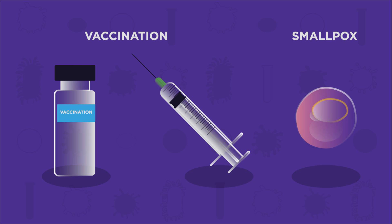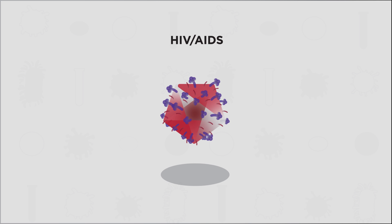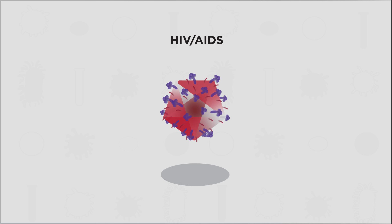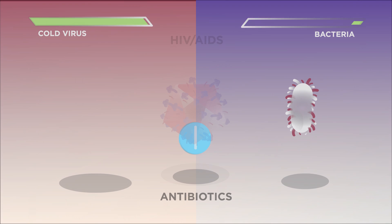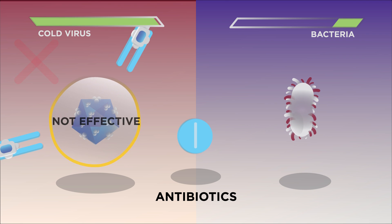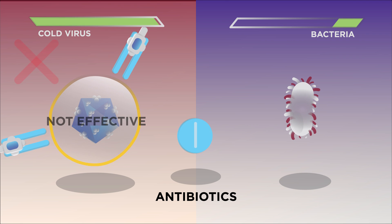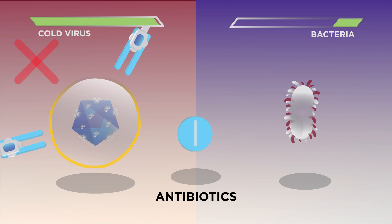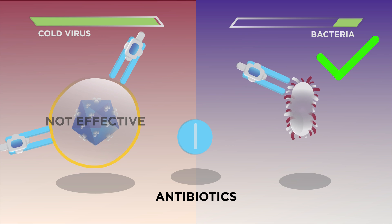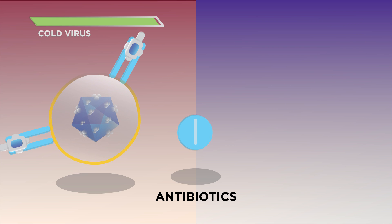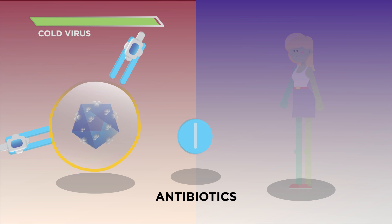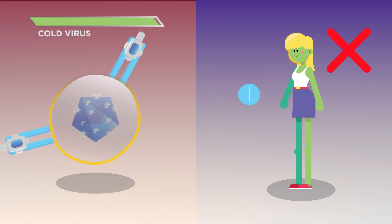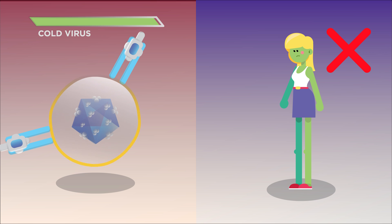However, some viruses like HIV have proved impossible to develop any kind of vaccine for. Did you know that antibiotics do not work for viruses? They are only for bacterial infections. If you have a cold or flu, you shouldn't be taking antibiotics — they won't make any difference.